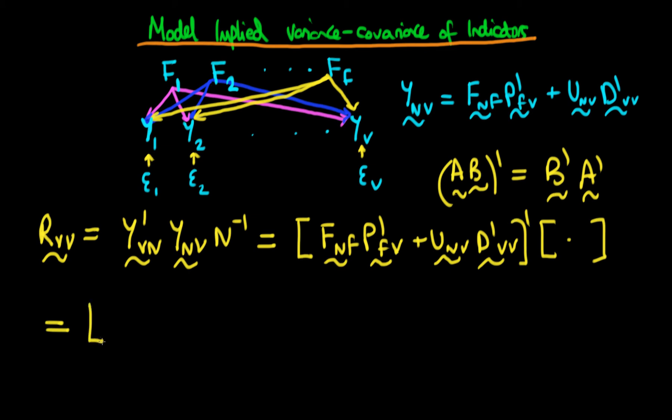So if we do that, we find that this first parenthesis becomes p_vf times f_fn, which I'm going to then indicate by putting a prime over there, just to indicate the fact that I've actually taken the transpose of that.